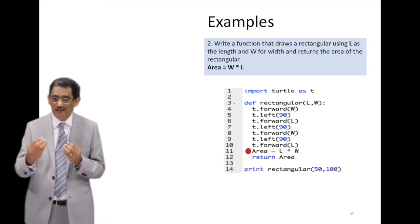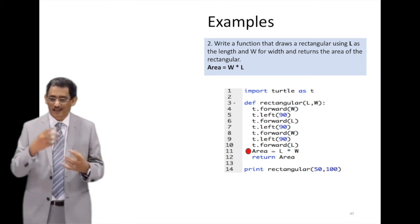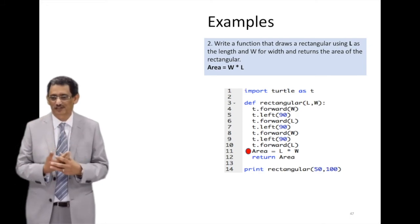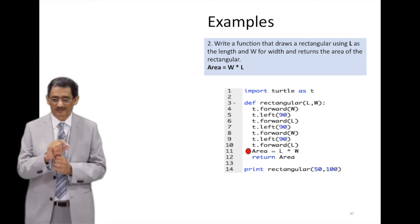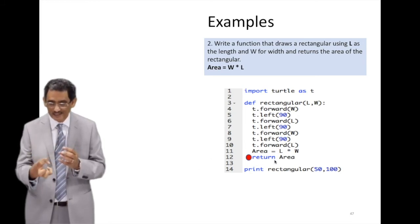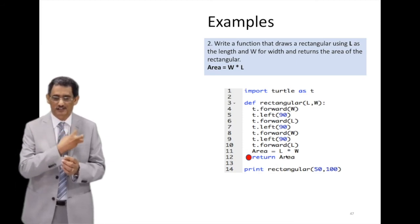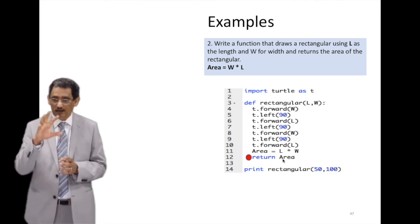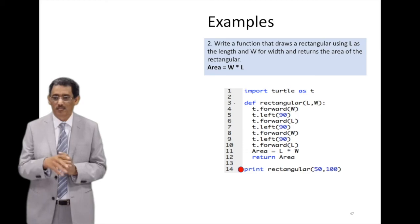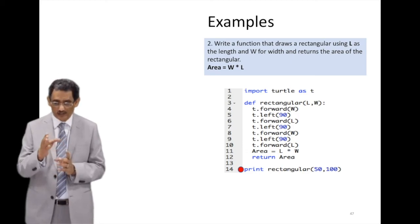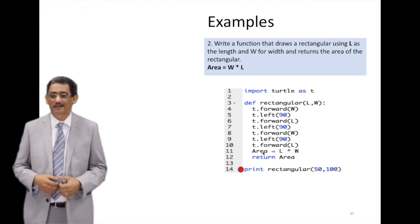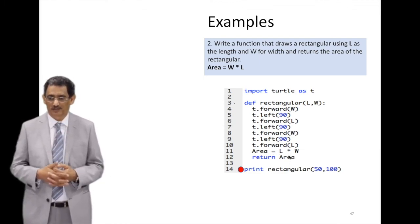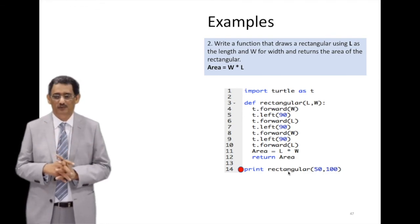And we'll get into that in more details in next videos. So this one created the area, L multiply W value. Then you see the keyword return. That keyword return is the one that will send back the result to the caller function or to the user or to the function. Now the last line we have is print. We're printing the results by calling the function rectangular, supplying 50 and 100. Now it will go to the function, it will draw the function, it will calculate the area, and it will return to us a value for area which will be displayed on the screen. We'll see it in the live code when we come to the live code.